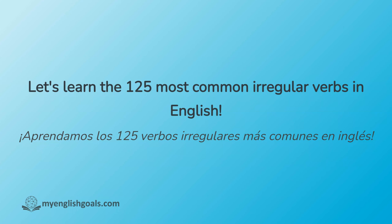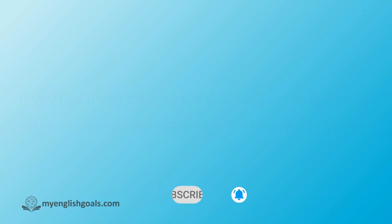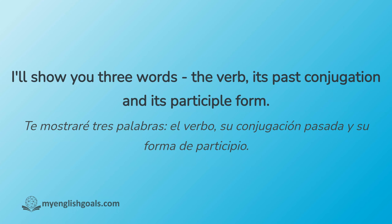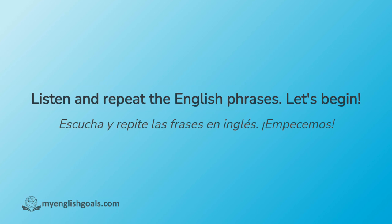Let's learn the 125 most common irregular verbs in English. If you like these exercises, subscribe now to get more. I'll show you three words: the verb, its past conjugation, and its participle form. But I'll only use one conjugation in the example sentence for this exercise. Listen and repeat the English phrases. Let's begin.